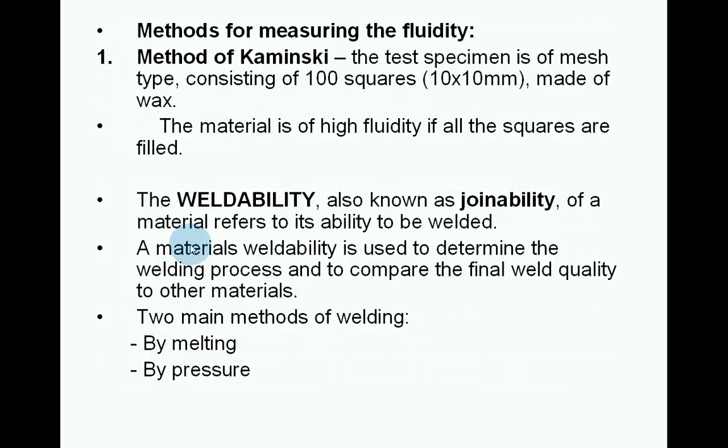Methods for measuring fluidity include the method of Kameninsky, where the test specimen is a mesh type consisting of 100 squares of 10×10 mm made of wax; the material is of high fluidity if all the squares are filled. Weldability, also known as joinability, refers to a material's ability to be welded and is used to determine the welding process and compare final weld quality. The two main methods of welding are welding by melting and welding by pressure.